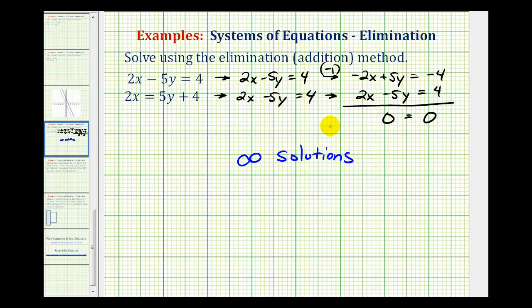So it is important to be aware of what happens algebraically when there's an infinite number of solutions as well as if there is no solution. Again, if there was no solution, this equation here would be false. But in this case, it's true, so we know we have an infinite number of solutions.